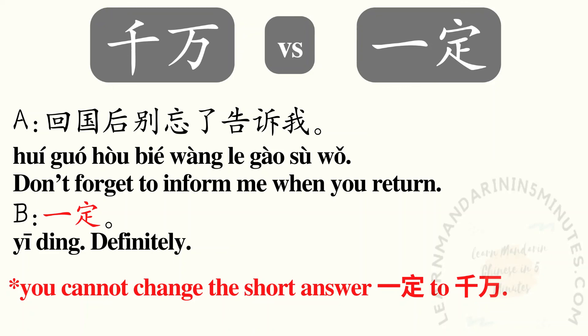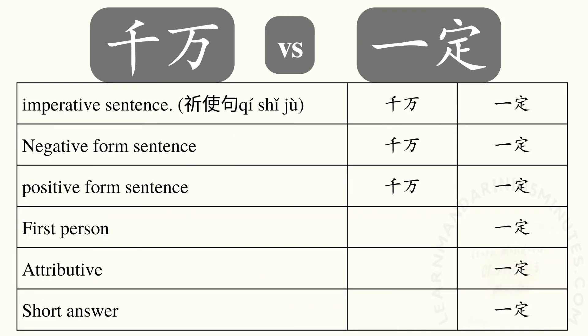回国后，别忘了告诉我。一定。 Don't forget to inform me when you return. Definitely. You cannot change the short answer 一定 to 千万. Grammar notes for 千万 and 一定: for imperative sentences, you can use 千万 or 一定. For negative form sentences, you can use both 千万 and 一定. For positive form sentences, you can use 千万 and 一定. But for first person sentences, attributive sentences, and short answers, you can only use 一定.